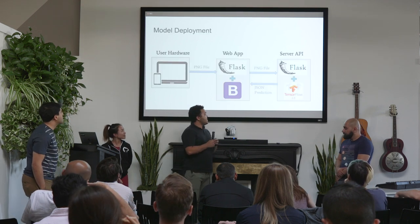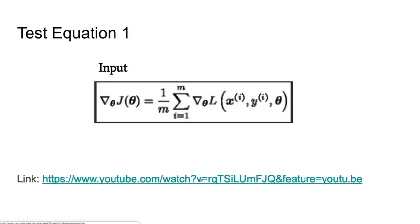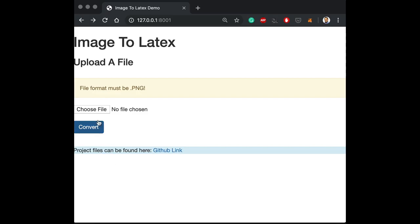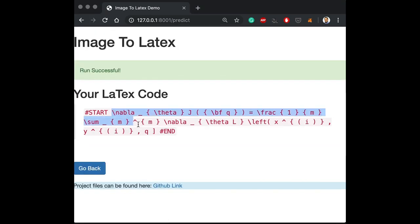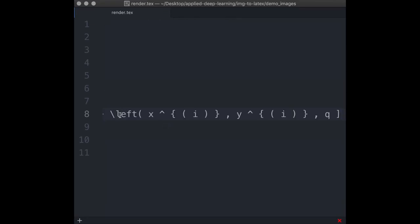And this is our pipeline. So we have a web app that uses Flask and Bootstrap, and then in the backend we have a server that's Flask and TensorFlow 2.0. So we have a demo for you guys. We're gonna send over this equation here. So this is the website here. We choose a file, and then we have that image that I showed. Convert, and then that's the LaTeX code. Put that into a TeX file and then render it.